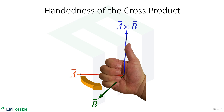The cross product has a handedness associated with it. There are two possible directions perpendicular to that area, so the cross product follows the right-hand rule. If you curl the fingers on your right hand in a way that would rotate vector A into vector B, your thumb points in the direction of the cross product. If we reverse the order of A and B, we'd get the opposite direction, which doesn't follow the right-hand rule — and getting this wrong means wrong signs in the problem.